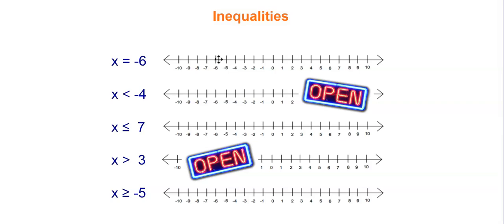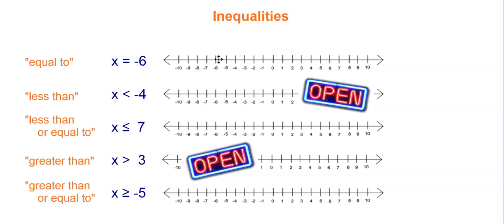Let's step back to Algebra 1 and make sure we remember inequalities. On the left side we have a bunch of symbols. The first one is just equal to, so it's just a dot on negative 6 if we were to graph it. The second one is less than — it's all the numbers less than negative 4, shaded to the left, but it doesn't include negative 4, so it's an open circle.